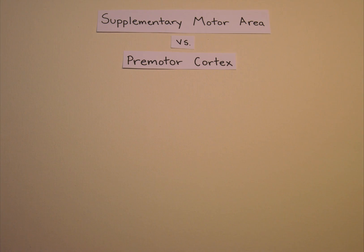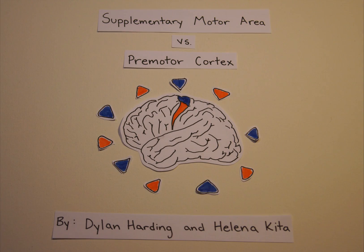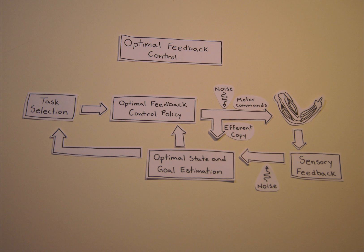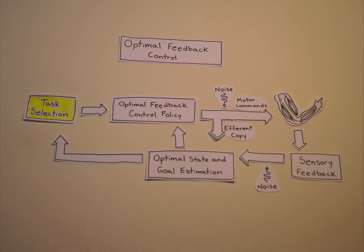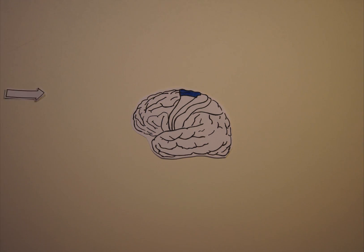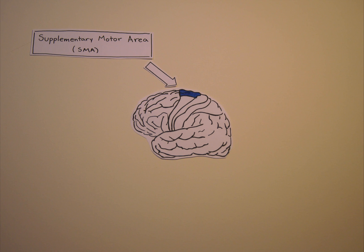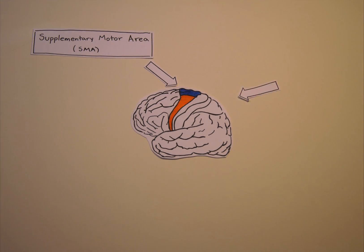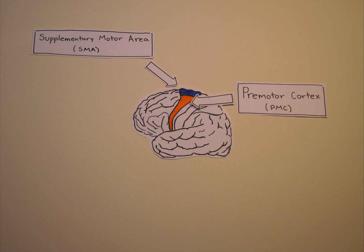The Supplementary Motor Area vs. the Premotor Cortex. According to the Optimal Feedback Control Theory of Voluntary Motor Action, a task must be selected to produce motor commands. Two areas associated with this task selection are the Supplementary Motor Area and the Premotor Cortex, both associated with different elements of motor planning.